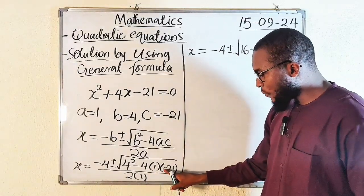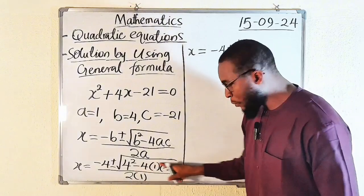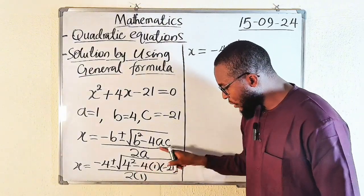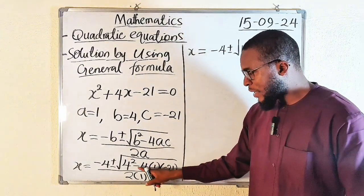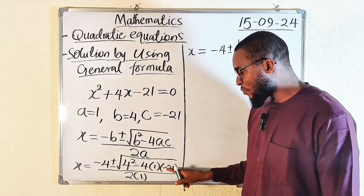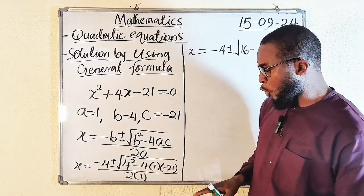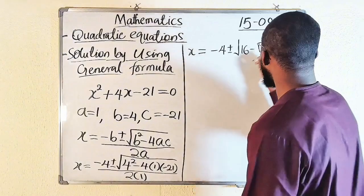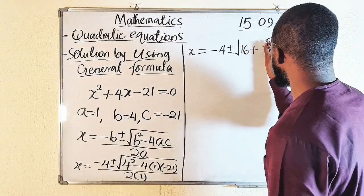Since we have minus minus, remember we are multiplying here. Minus 4 times 1 is minus 4. Then minus 4 times minus 21 will give us plus 84. So this will be plus 84.